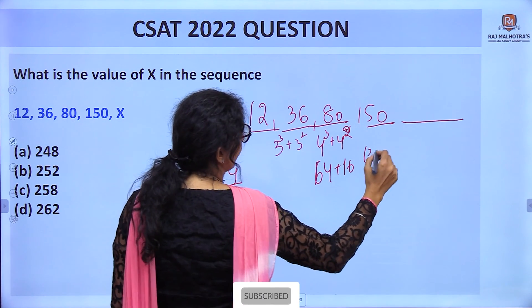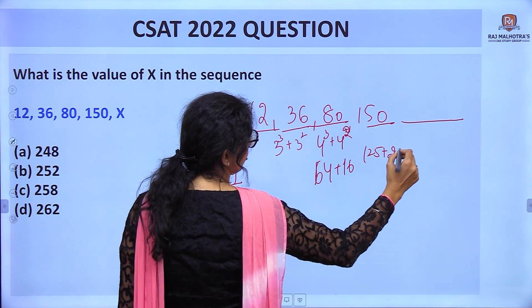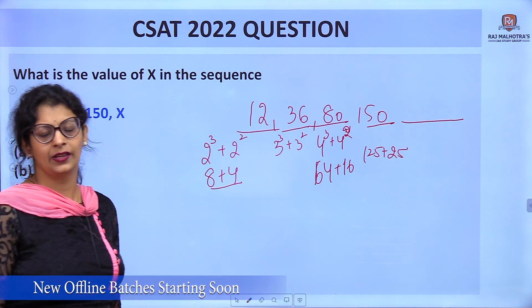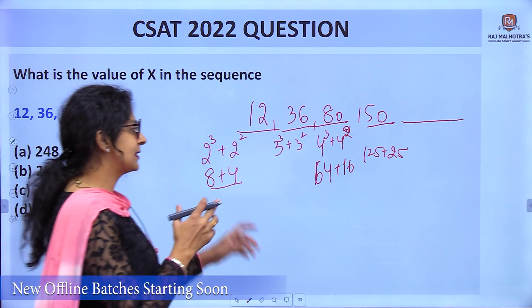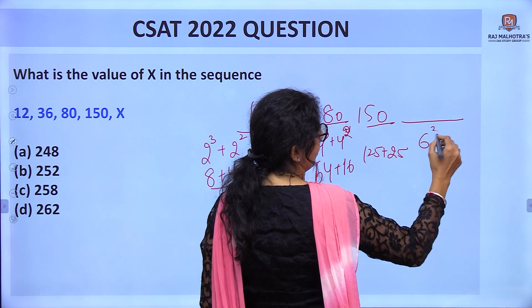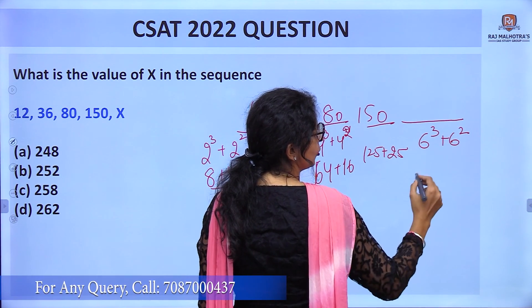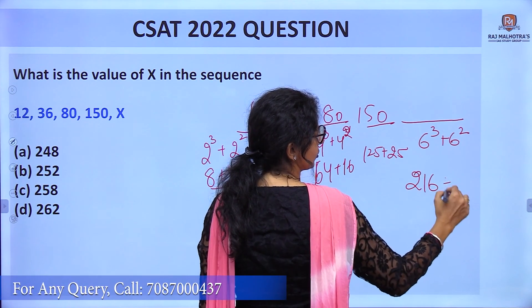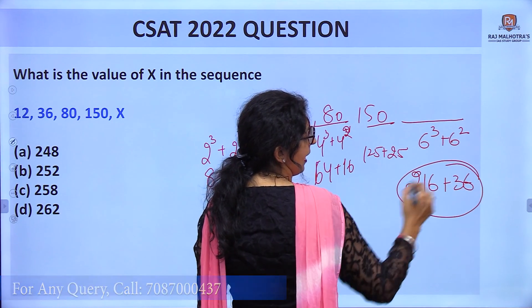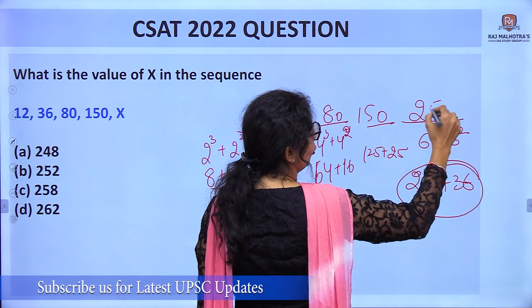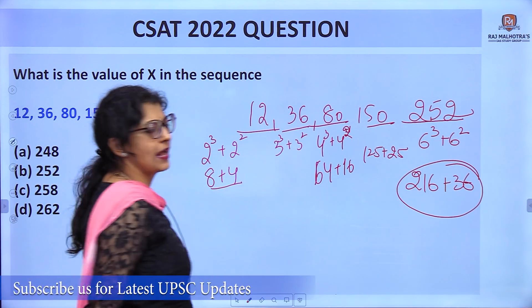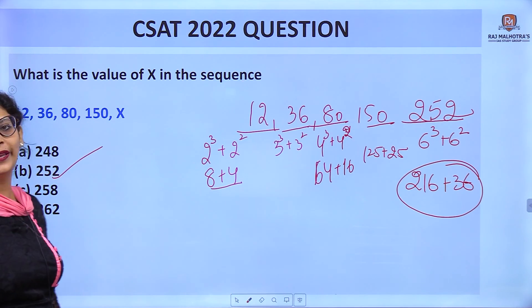150 = 5³ + 5² = 125 + 25. So the next one is 6³ + 6² = 216 + 36 = 252. The answer is 252, which is option B.